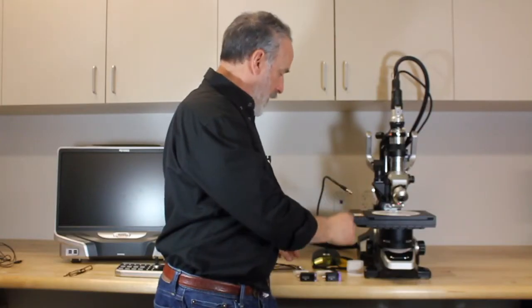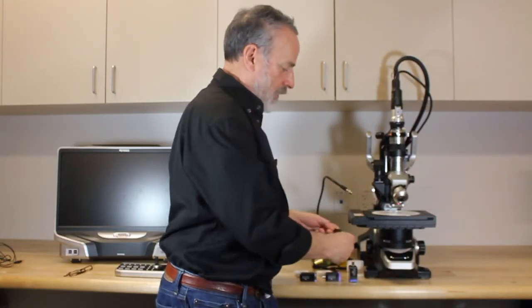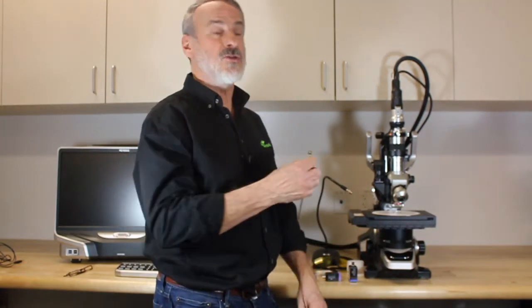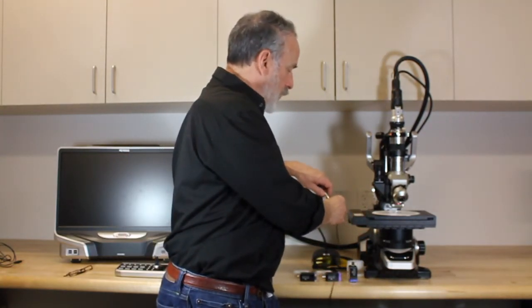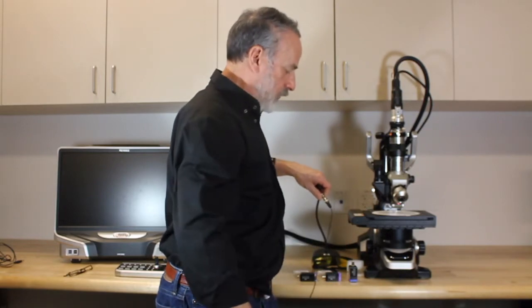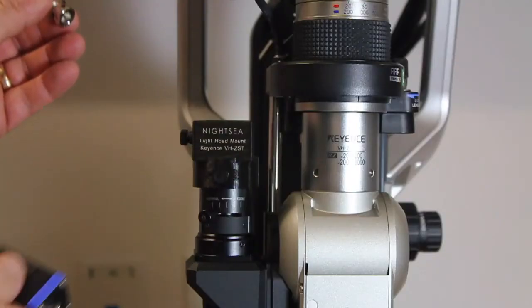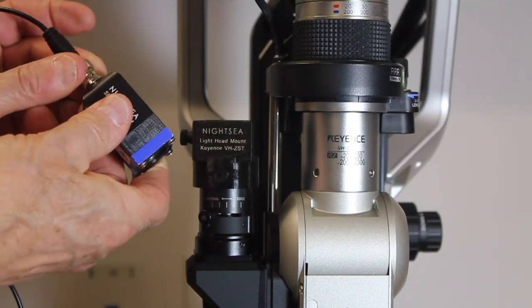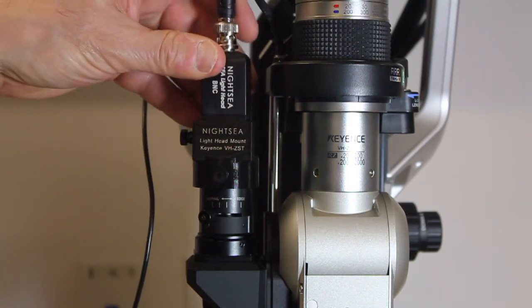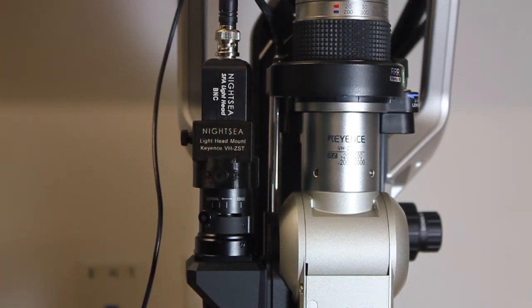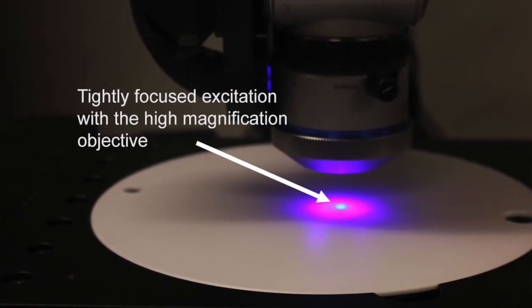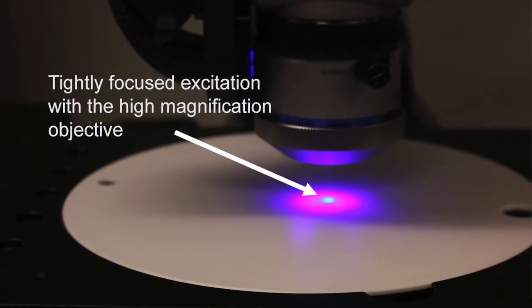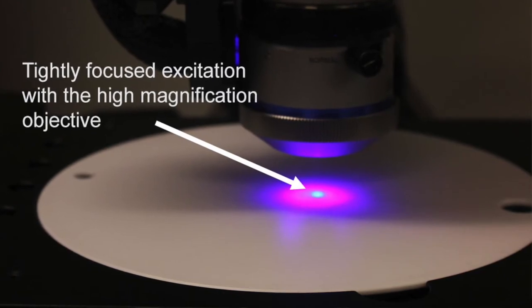The light heads will mount in that, but in order to get the electricity to the light heads, we have a cable. One end plugs into the gooseneck, the other end plugs into the connector on the light head. We can then insert that into the spot, tighten the thumb screw lightly, and that's now ready to go.